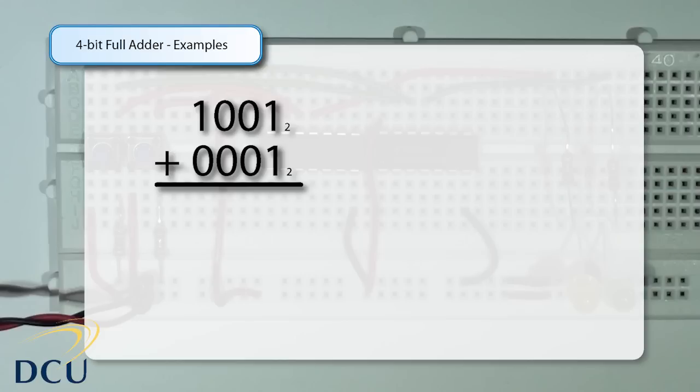If we look at the addition itself, we start on the rightmost side, the least significant bit, and we do 1 plus 1, which gives us 0 with a carry of 1 to the next stage. At the next stage we go 0 plus 0 plus 1, which gives us 1 with a carry of 0. 0 plus 0 plus 0 gives us 0 with a carry of 0, and 1 plus 0 plus 0 gives us 1 with a carry of 0. So the result is 1010, which is indeed 10 in decimal.